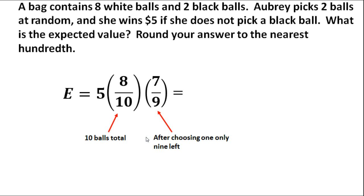So the expected value, we're choosing two of them. We're going to multiply whatever the dollar amount is that she's going to win, in this case it's 5, times the probability that the first one will be white. Then multiply that by the probability that the second one will be white. And she's going to keep it. It would make no sense to put it back because her goal is to get only white ones.